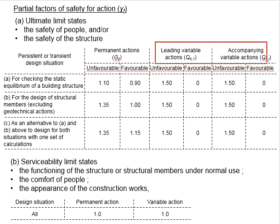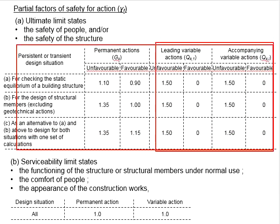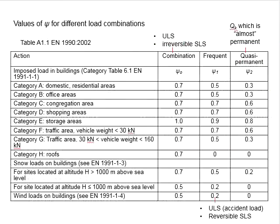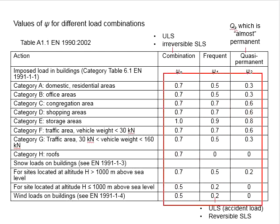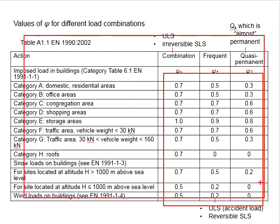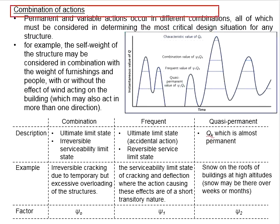The leading and accompanying variable actions make no difference in terms of factors of safety in the serviceability limit state table. However, based on the rationale that it is quite rare for all variable actions to appear at their maximum conditions simultaneously, the analysis assumes that one variable action is at its maximum while the rest are not. Therefore, a reduction factor is applied to the accompanying variable actions, leading to the concept of combinations of actions.